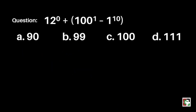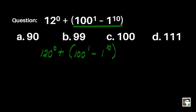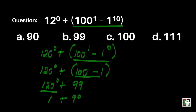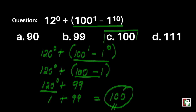Next question: 12 to the 0th power plus the quantity of 100 to the 1st power minus 1 to the 10th power. Is it A) 90, B) 99, C) 100, or D) 111? We do the groupings first: 100 to the 1st power is 100, and 1 to the 10th power is 1. So 100 minus 1 is 99. Next, any number raised to the 0th power equals 1, so 12 to the 0th is 1. Then 1 plus 99 is equal to 100. Our final answer is letter C.